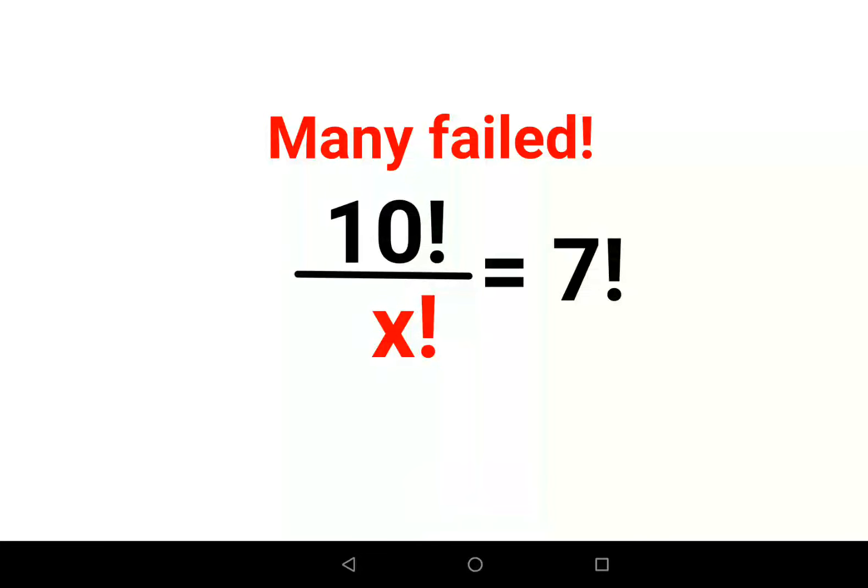Welcome everyone. Today we're going to solve a very nice factorial problem: 10 factorial upon x factorial equals 7 factorial. Now, a lot of people think that we can cancel the factorials, but no, it doesn't work like that. So here's what we will do.